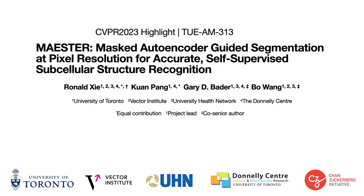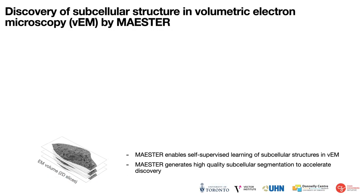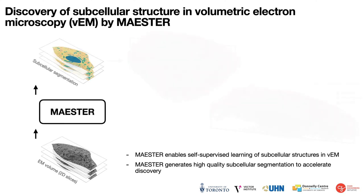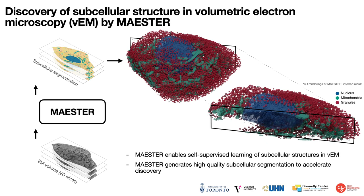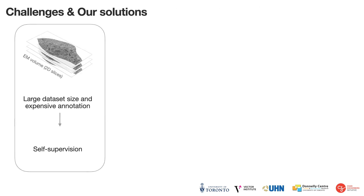My name is Ronald and Quan. We are presenting our CVPR 2023 highlight paper titled Meister: Masked Autoencoder Guided Segmentation at Pixel Resolution for Accurate Self-Supervised Subcellular Structure Recognition. Subcellular structure segmentation often precedes analysis of volumetric electron microscopy datasets. However, this task is challenging due to the large dataset size and the lack of manual labels to train robust segmentation models in a supervised setting. Meister treats this segmentation task as a self-supervised representation learning and clustering problem. The novel stride-and-cover inference strategy further increases segmentation resolution to the level of individual pixels. This approach outperforms existing self-supervised solutions by as much as 29% in average DAI score. Volumetric electron microscopy can generate terabytes of imaging data in a single run.